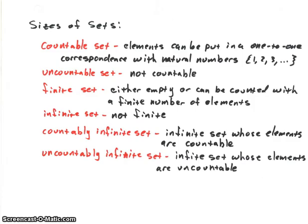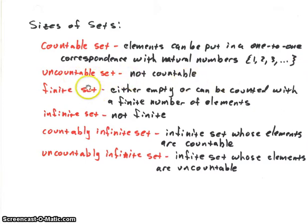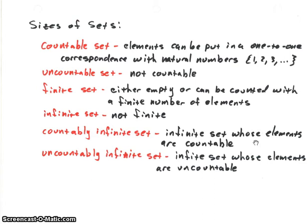Now let's look at sizes of sets. A countable set is one where we can count the elements: 1, 2, 3, 4. An uncountable set has too many elements to count. We can have finite sets with a finite number of elements, or infinite sets with an infinite number. Combining these, we get countably infinite sets and uncountably infinite sets.